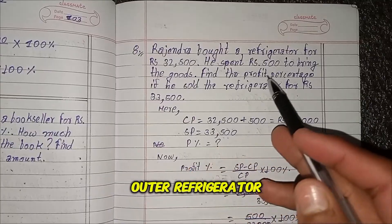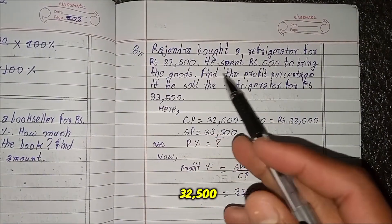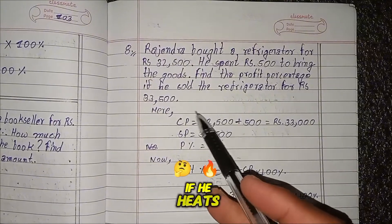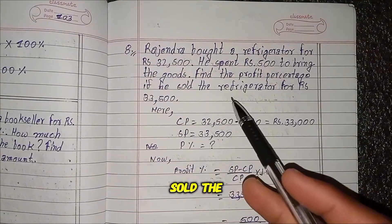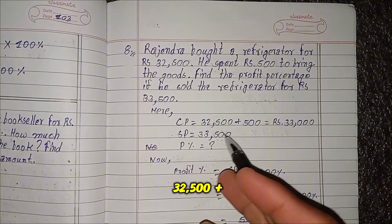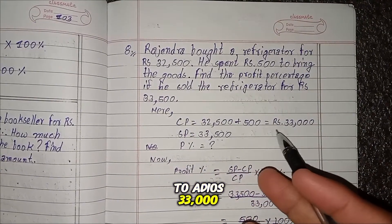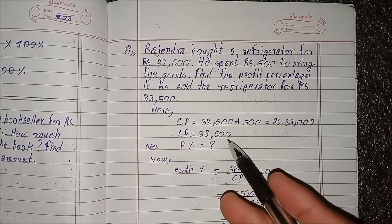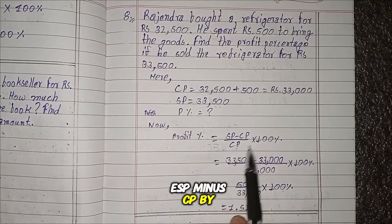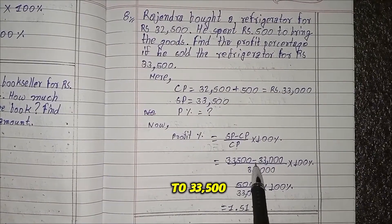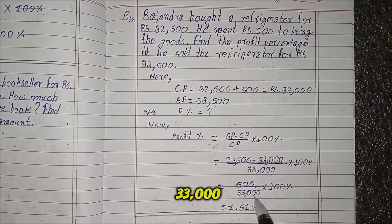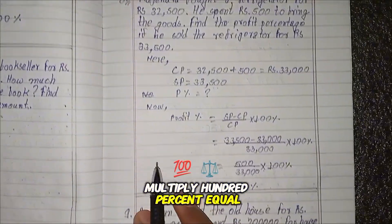Question 8: A man bought a refrigerator for RS 32,500 and spent RS 500 to bring the goods. Find the profit percentage if he sold the refrigerator for RS 33,500. CP equals 32,500 plus 500 equals RS 33,000. SP equals RS 33,500. Profit percent equals (33,500 minus 33,000) by 33,000 multiplied by 100 percent equals 500 by 33,000 multiplied by 100 percent equals 1.51 percent.